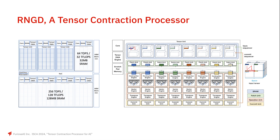Furiosa AI's second product, Renegade, is an implementation of a Tensor Contraction Processor for highly efficient inference with LLMs. Renegade features eight PEs, each with 64 TOPS and 32MB SRAM. Each PE can function independently or be fused with up to four PEs to act as a single large PE. Each PE includes a general-purpose core and a massive tensor unit that supports tensor and vector operations, including accelerated tensor contraction capabilities. The tensor unit consists of 64 slices.